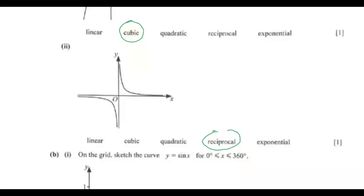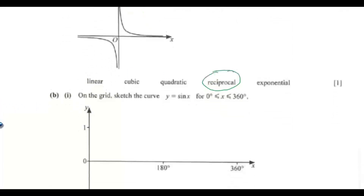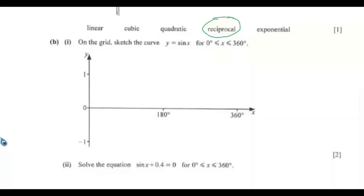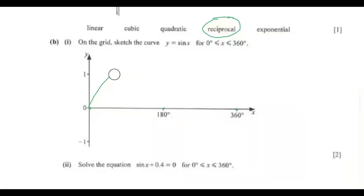Part b. On the grid, sketch the curve y = sin x for 0 ≤ x ≤ 360°. The curve starts at the origin, goes up, comes back through the midpoint, dips below, and ends back at the axis.